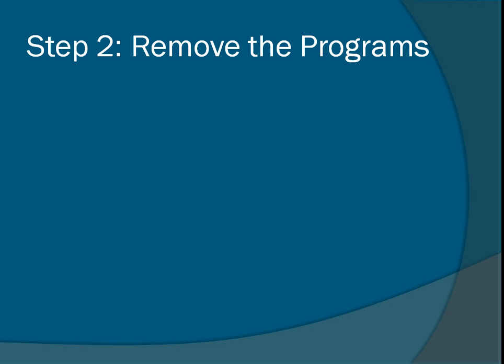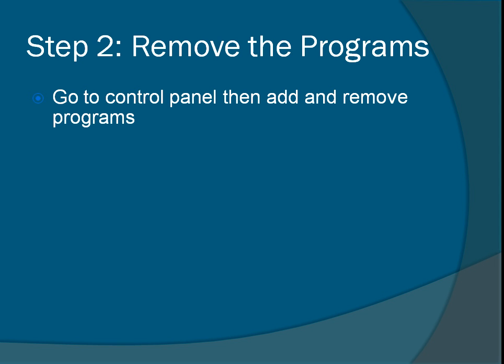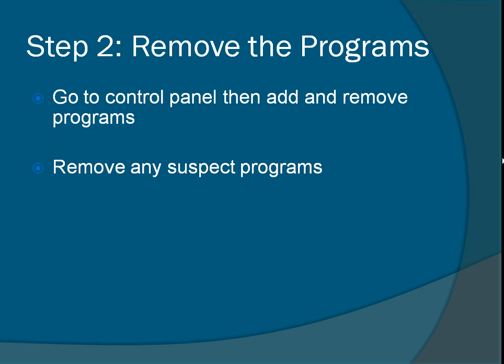The second step: you need to remove the programs that are running the adware. You'll find these if you go to the Control Panel and then Add and Remove Programs. If you click the Start bar and type in Add and Remove Programs, you should find the correct place. You'll see a list of all the programs installed on your computer, so remove any that sound suspect. For example, ones that say publisher Microsoft will be fine, but if you see any weird ones, you should be deleting these.